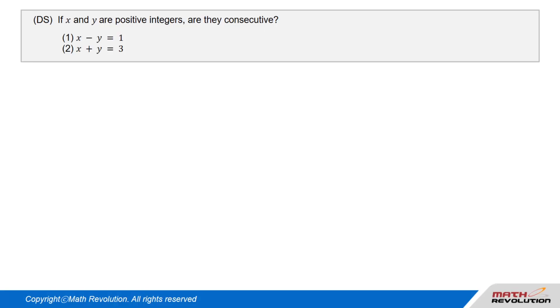Question 4. DS. If x and y are positive integers, are they consecutive? Condition 1: x minus y equals 1. Condition 2: x plus y equals 3.